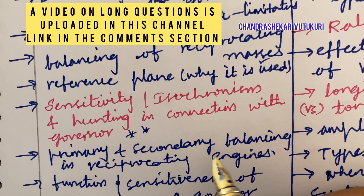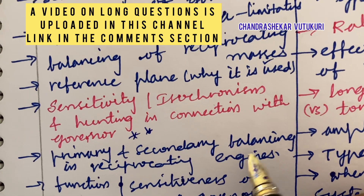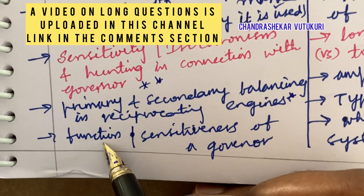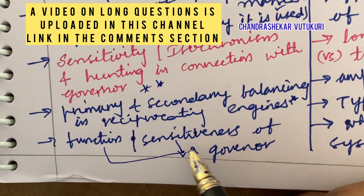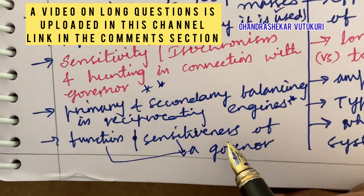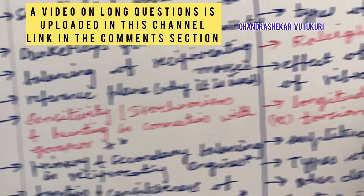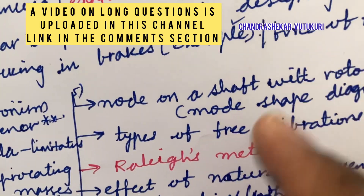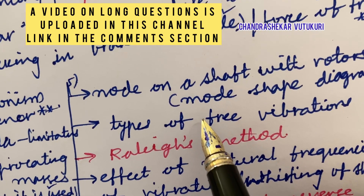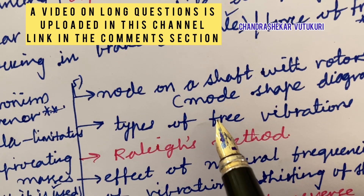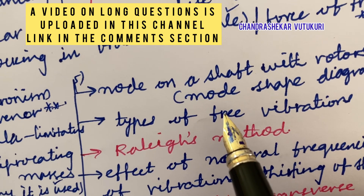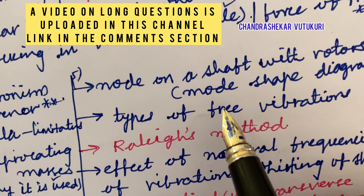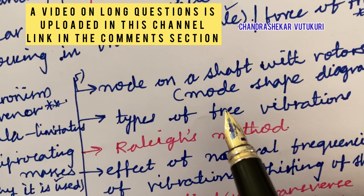Sensitivity, isochronism, and hunting in connection with the governor — explain these terms. Primary and secondary balancing in reciprocating engines, the function of a governor, and sensitiveness of a governor are top-most questions — these may appear in both Part A and Part B. I have uploaded a video on Part A and Part B as per the COVID exam pattern on Dynamics of Machinery — please go through it for good marks.